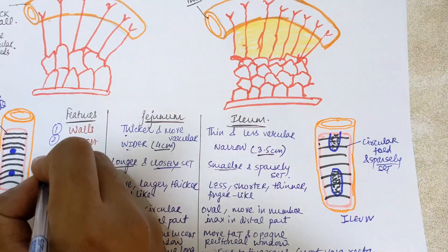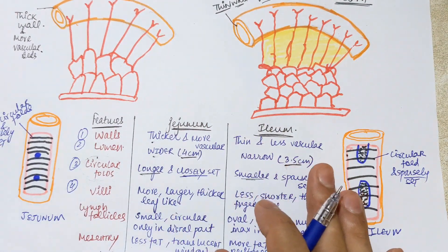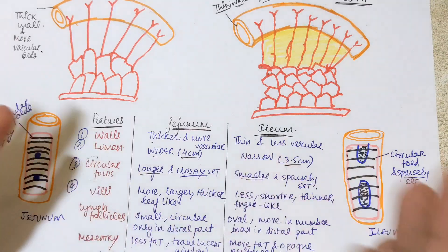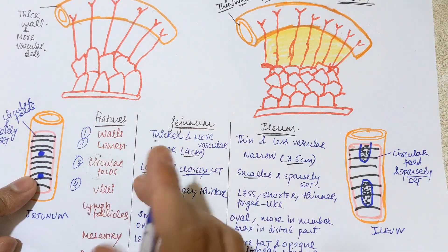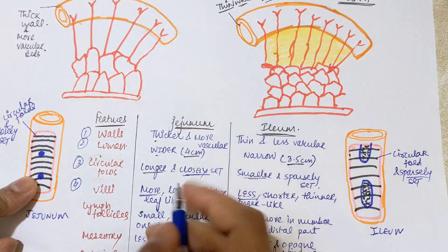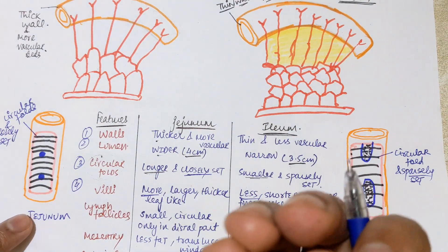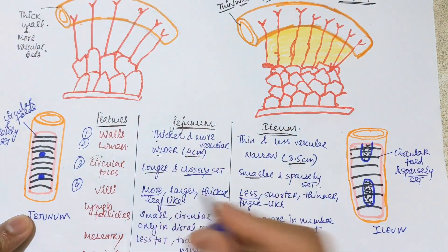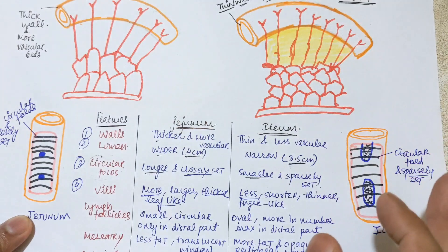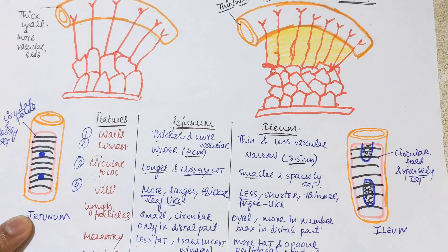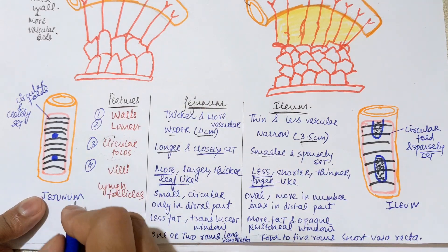The fourth difference is the villi. In jisnam, villi are more in number compared to helium, and they are larger in size — thicker with a leaf-like shape. In the case of helium, villi are less in number, shorter, thinner, and have a finger-like shape rather than leaf-like. The villi increase the surface area on the mucous membrane for absorption of nutrients.